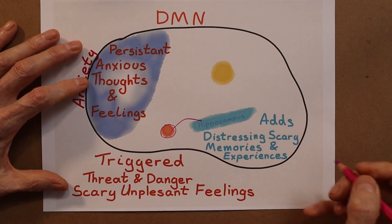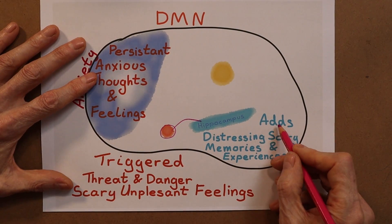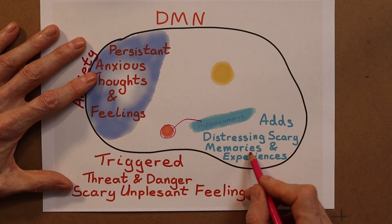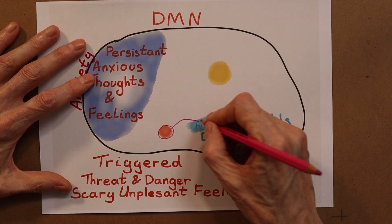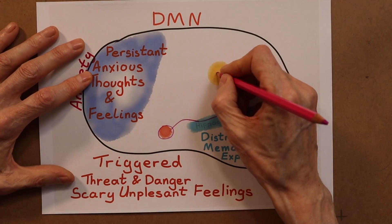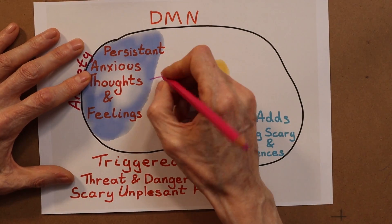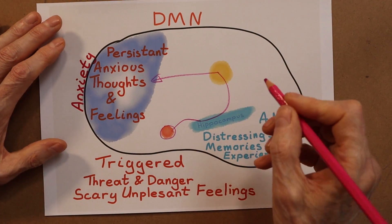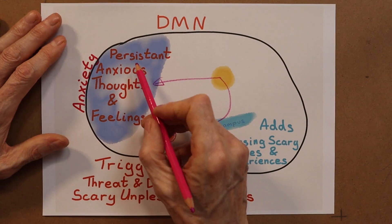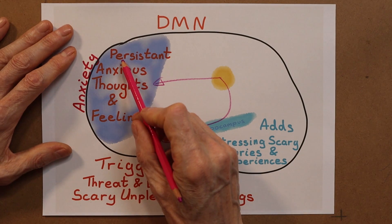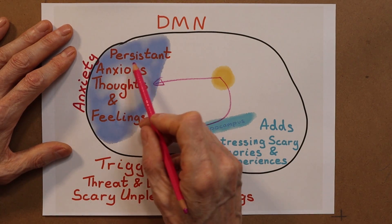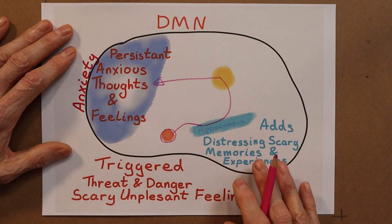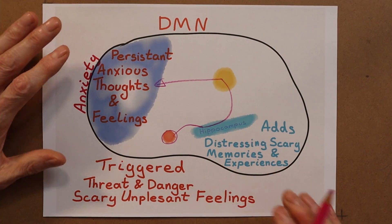It then checks in with the hippocampus, which adds distressing, scary memories and experiences, and passes this via the processing center into your cortex, where you now experience persistent anxious thoughts and feelings. In other words, you have anxiety.